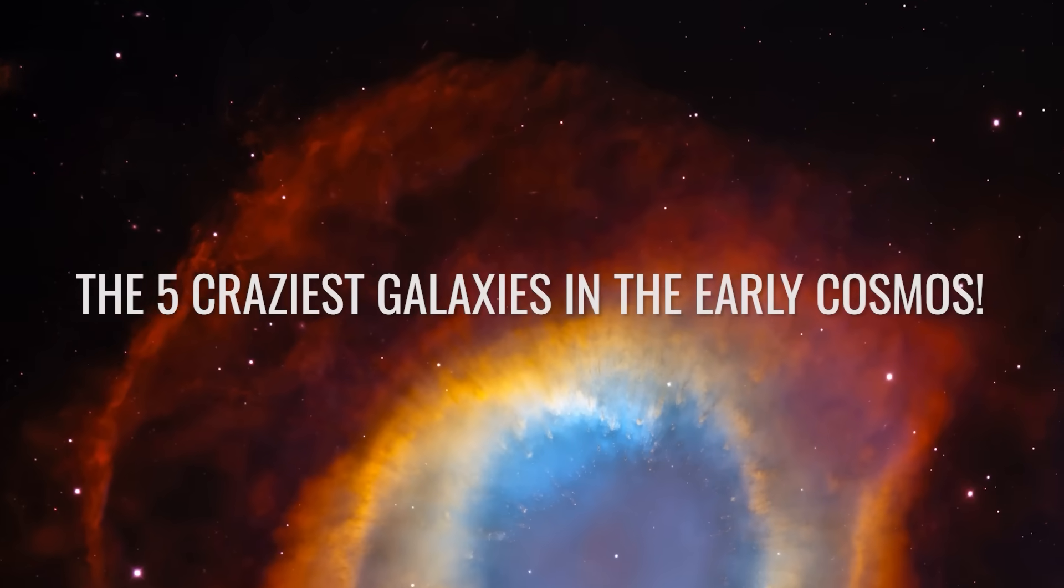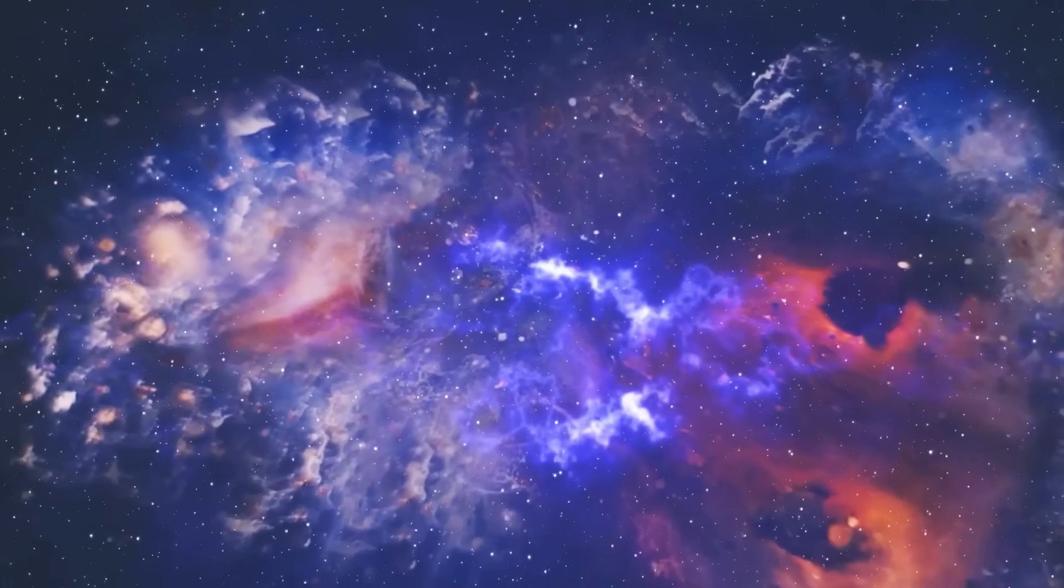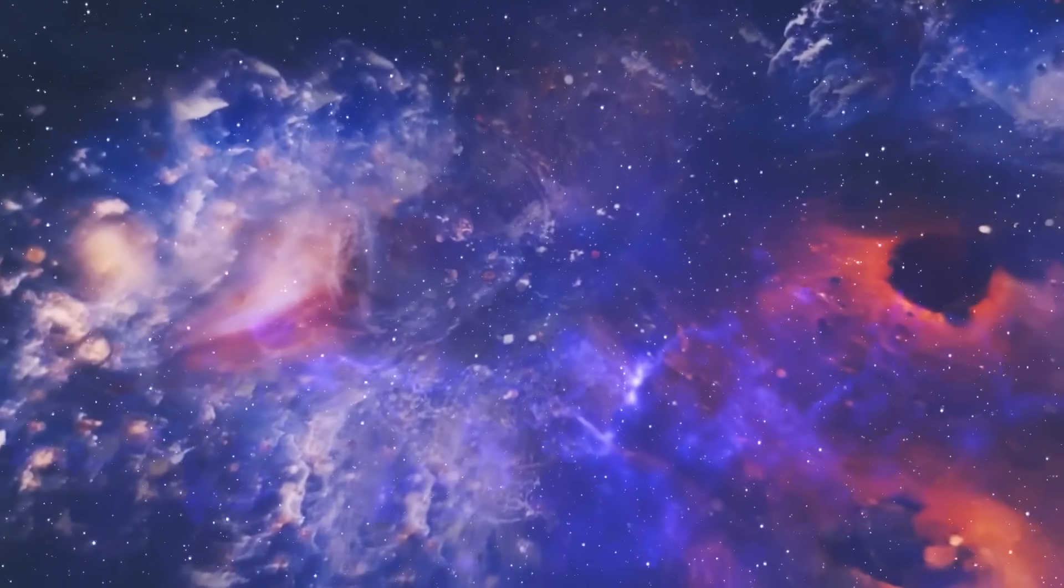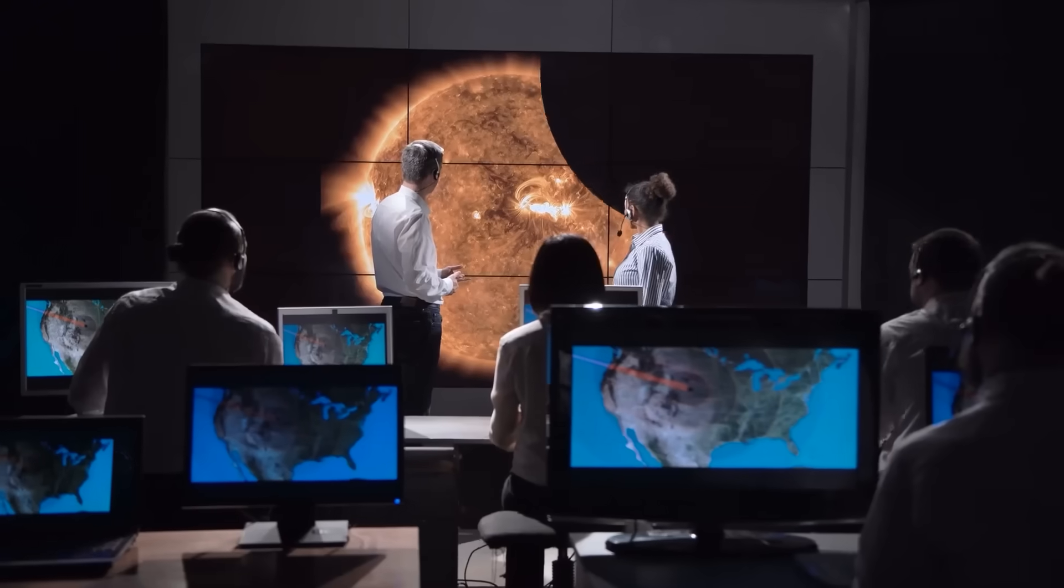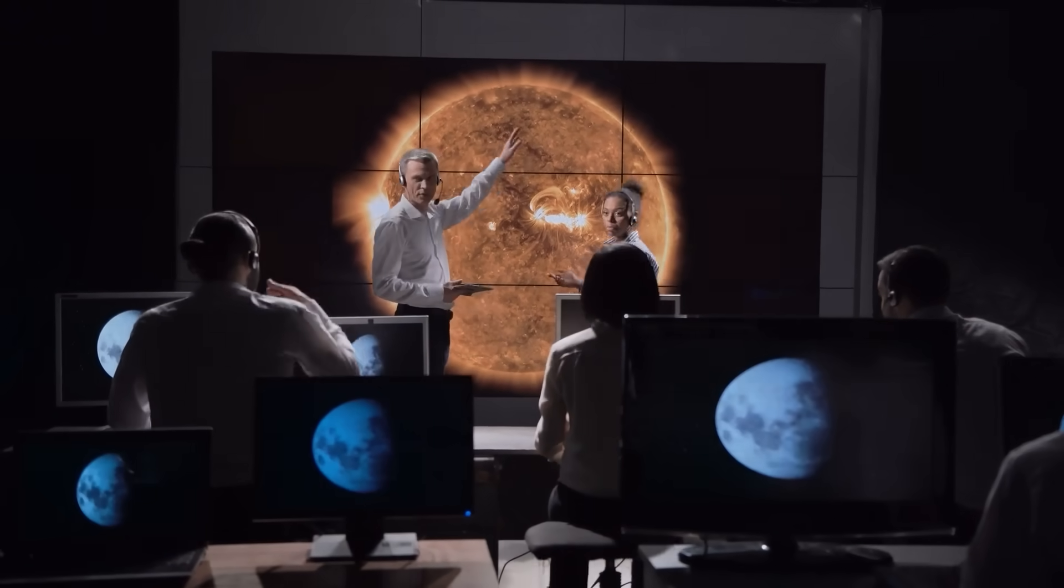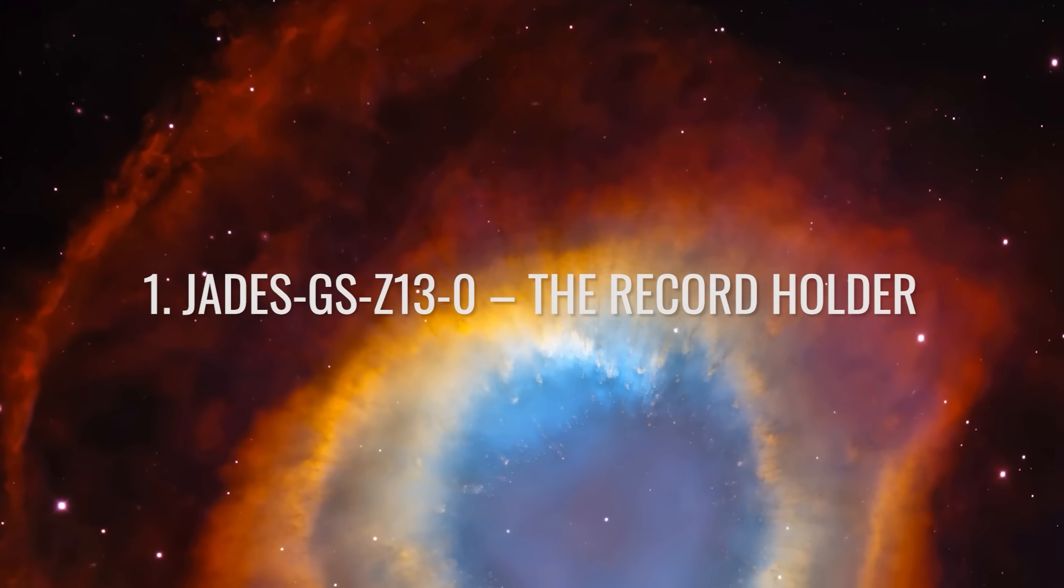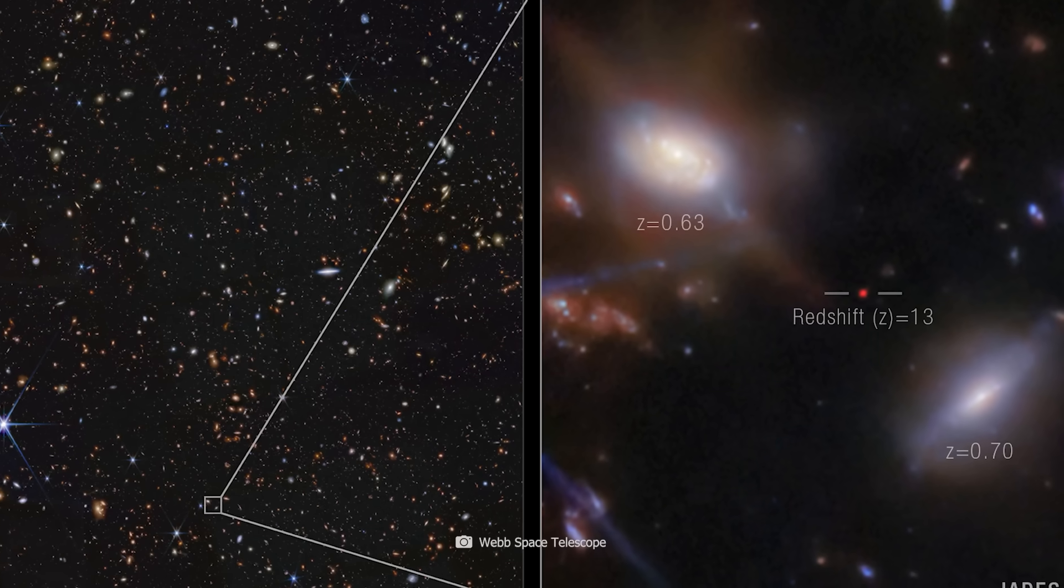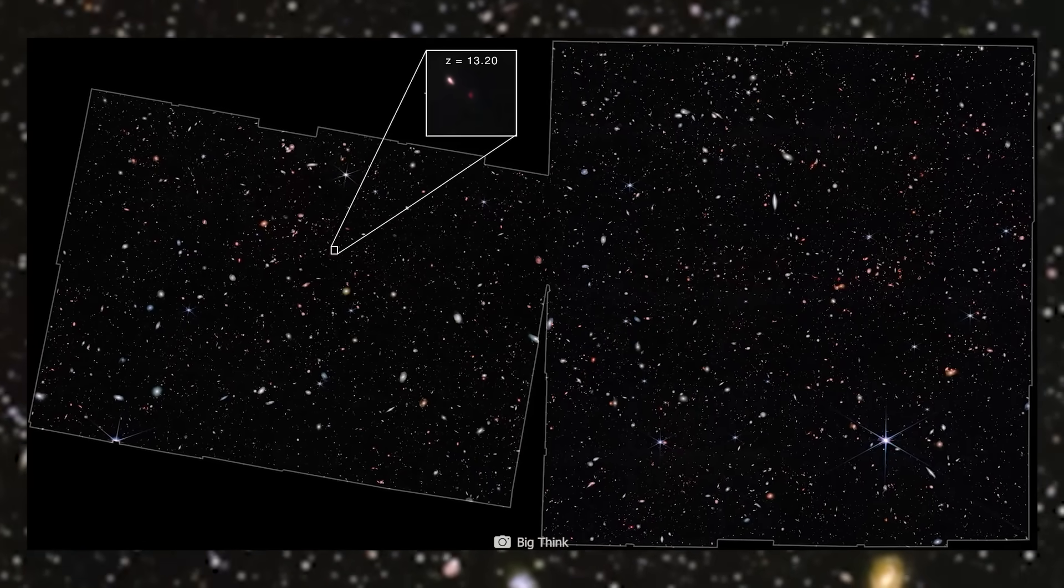The Five Craziest Galaxies in the Early Cosmos. Let's take a look at five of the most unusual galaxies discovered so far in the Young Universe. These galaxies are truly exotic, leaving scientists perplexed and excited at the same time. Number one: JADES-GS-Z13-0, the record holder. With a redshift of Z equals 13.2, this galaxy was the most distant known galaxy in the universe for a while. It shone only about 300 million years after the Big Bang, making it a real dinosaur among the Star Islands.